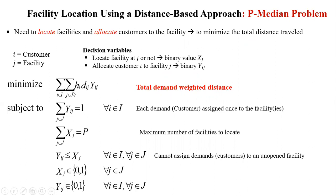The total demand-weighted distance is calculated as: Hi is the demand of customer i, Dij is the distance traveled by customer i to facility j, and Yij indicates whether customer i is allocated to facility j. This expression represents the total demand-weighted distance that we want to minimize.